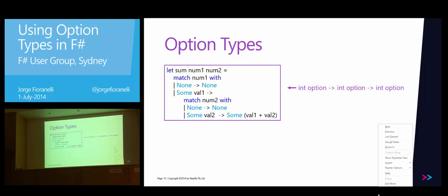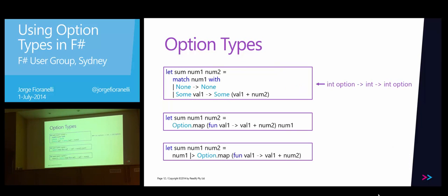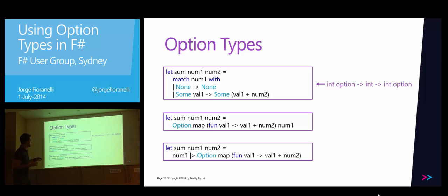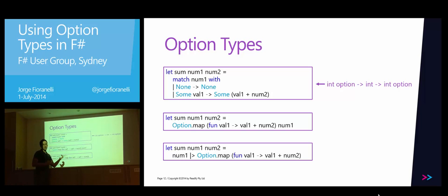Question: would there be a way to use the pipeline operator to pass in the lambda expression to option.map? No, because this only works for the last argument. What you could do if you need that — and sometimes you do — is that most functions in F# are designed so the thing you'll pass around goes last. Whenever you need to compute number one and pass it through different functions, the pipeline is useful: you write pipeline, then the next function, then another pipeline and the next function, and number one is passed along. If you need to change argument order, you can write a function that swaps the argument order.